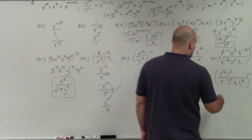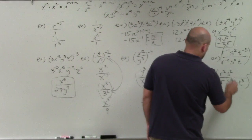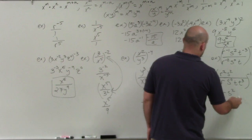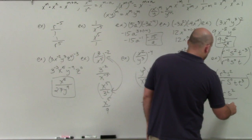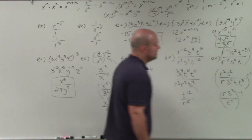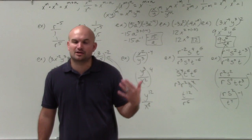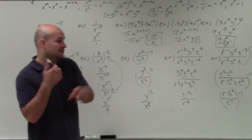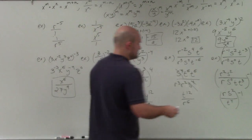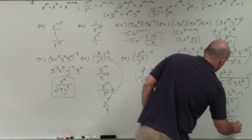Now I'll simplify that result. R squared divided by r leaves me with r. That becomes s squared, because 2 minus 0 is just 2, divided by t to the 4th, to the negative 1. Anything raised to the first power remains the same, but since it's negative, we know it's going to be the reciprocal. So I'll just write t to the 4th over r s squared — and that's your final answer.